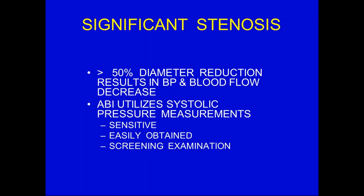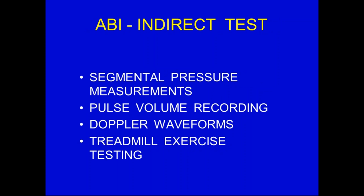When there's a 50% diameter reduction in the peripheral arteries, that causes a problem, resulting in decreased blood pressure and blood flow. We know in the carotid arteries we use a 50% diameter reduction as a significant stenosis, but nothing is done until 70% stenosis. A 50% stenosis has a greater effect in the lower extremity because of the end organ, which is primarily the muscles. ABIs utilize systolic pressure measurements. They can be sensitive and easily obtained. Most vascular labs will use this as a screening exam. It can evaluate segmental pressures, pulse volume recordings, Doppler waveforms, and can be utilized with treadmill exercise testing.